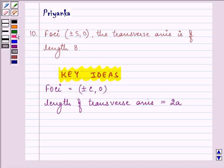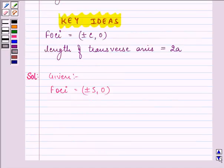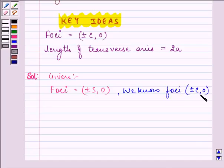Here we are given foci as equal to plus minus 5 comma 0. On comparing it with the key idea, we know foci as plus minus c comma 0. Thus the value of c is equal to 5.